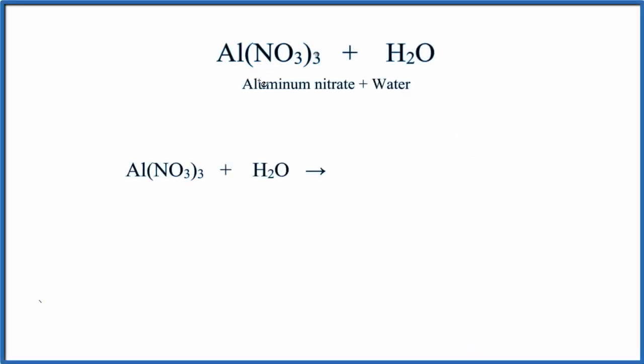In this video, we'll describe the equation for what happens when we put solid aluminum nitrate in water. Aluminum is a metal, nitrate is a non-metal. So when we have a metal and a non-metal, we have an ionic compound.